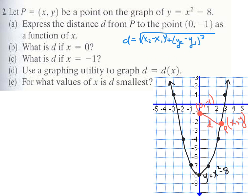Here is the distance formula: the square root of the difference between the x-coordinates squared, plus the difference between the y-coordinates squared — the same as the Pythagorean theorem. For part A, we want to use this to express the distance from point P, this arbitrary (x, y) point, to the point (0, -1) as a function of x. Pause the video and write an expression to represent this distance.